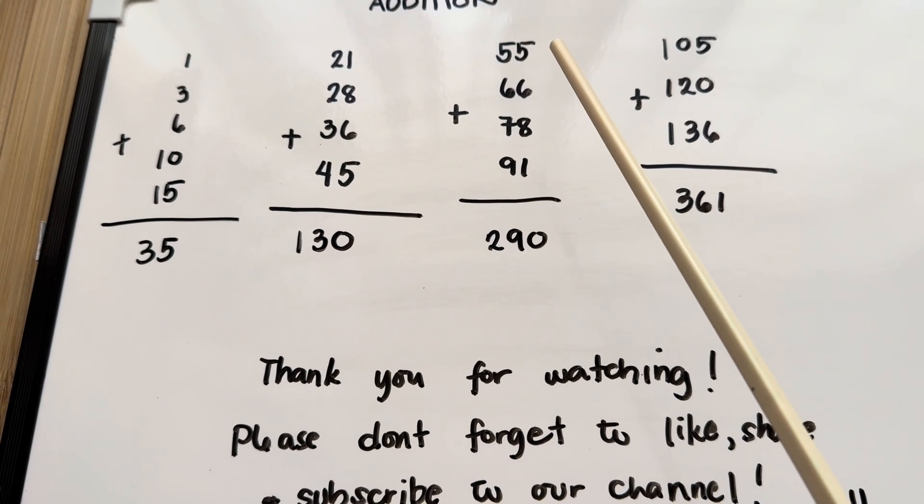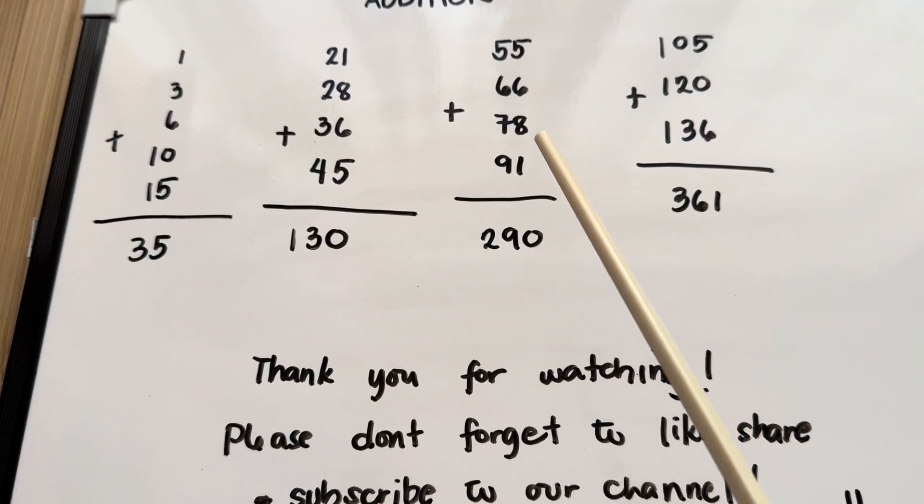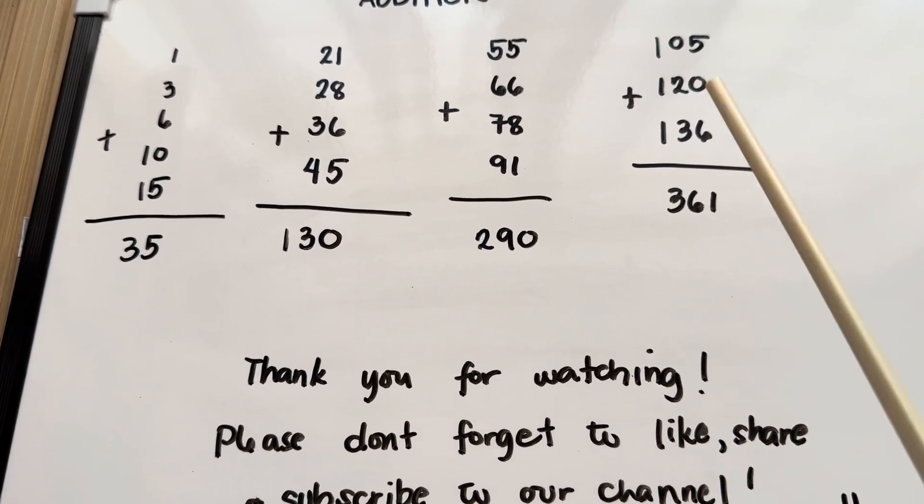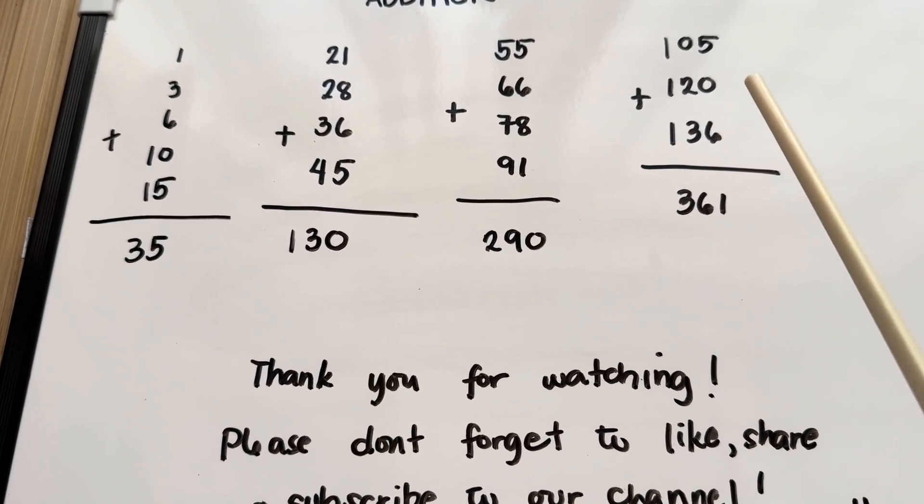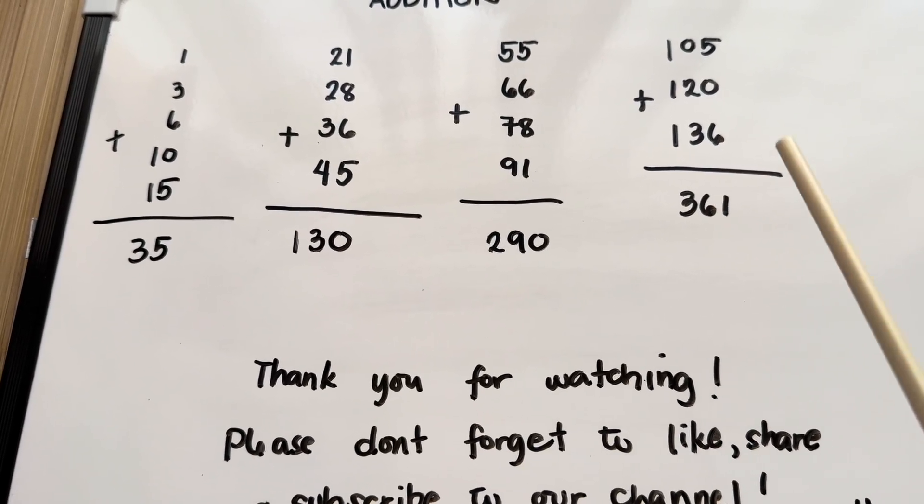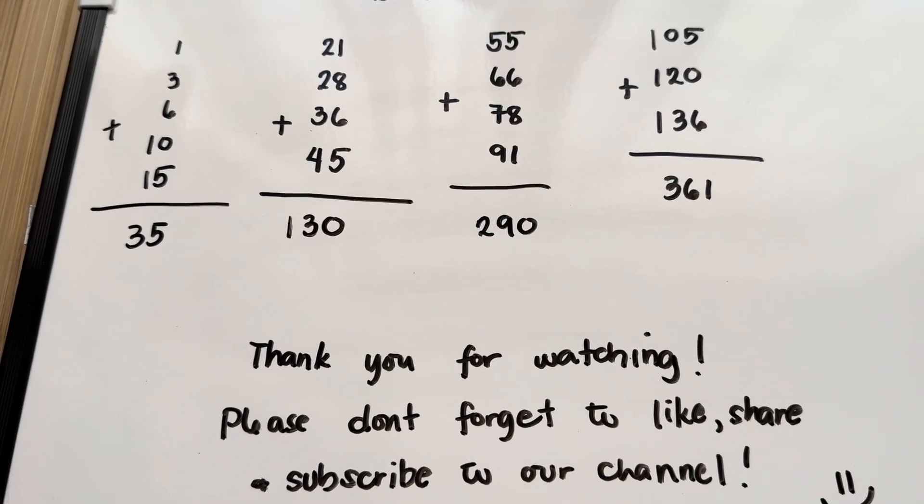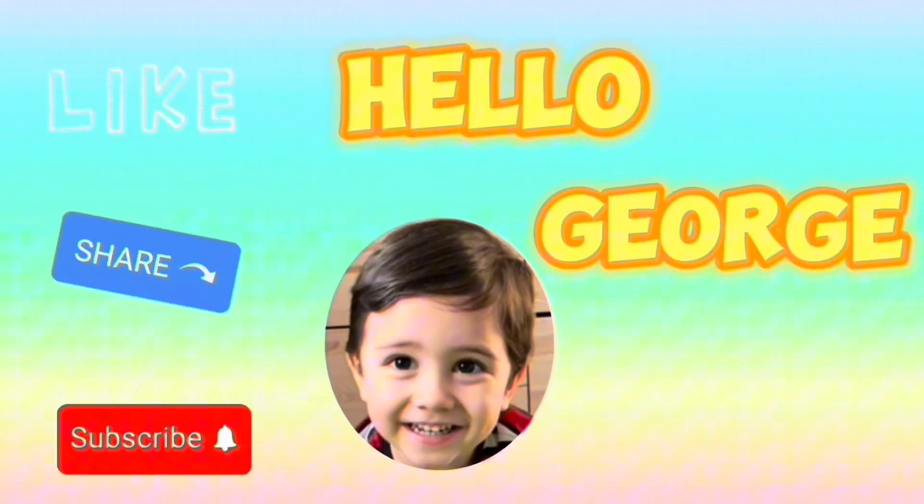55 plus 66 plus 68 plus 91 is equals to 290. And lastly, 105 plus 120 plus 136 is equals to 361.